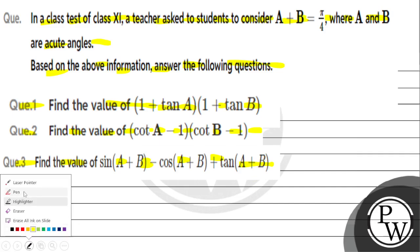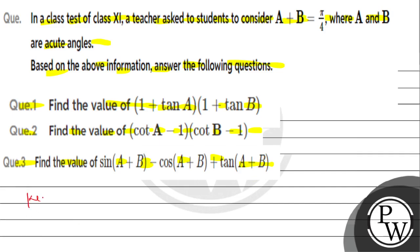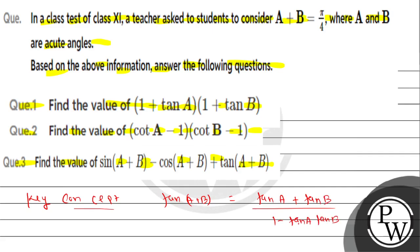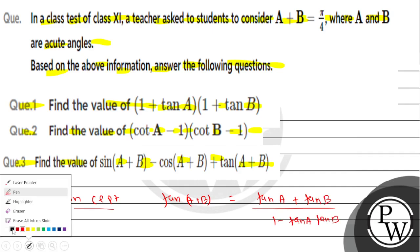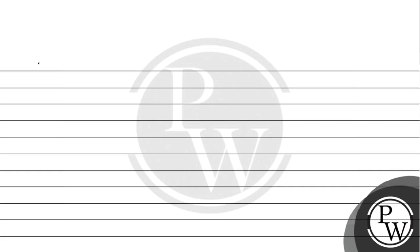So we need to find out these values. Let's look at the concept. The concept here is we will use the formula of tan(a+b). tan(a+b) is equal to tan a plus tan b upon 1 minus tan a into tan b. So let's look at question number 1. The information we have is a plus b equals pi by 4.